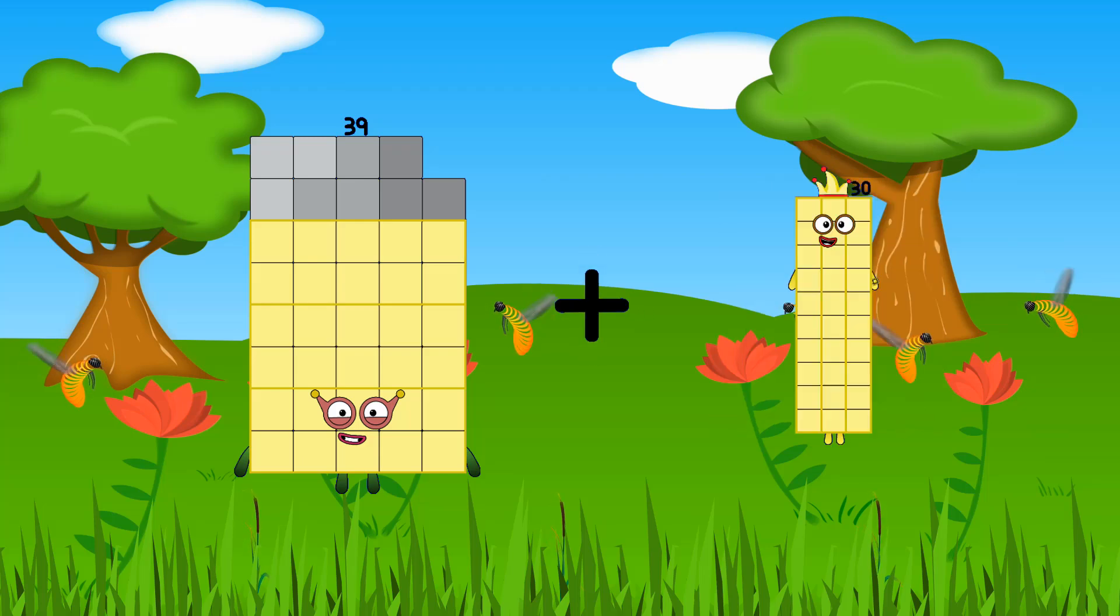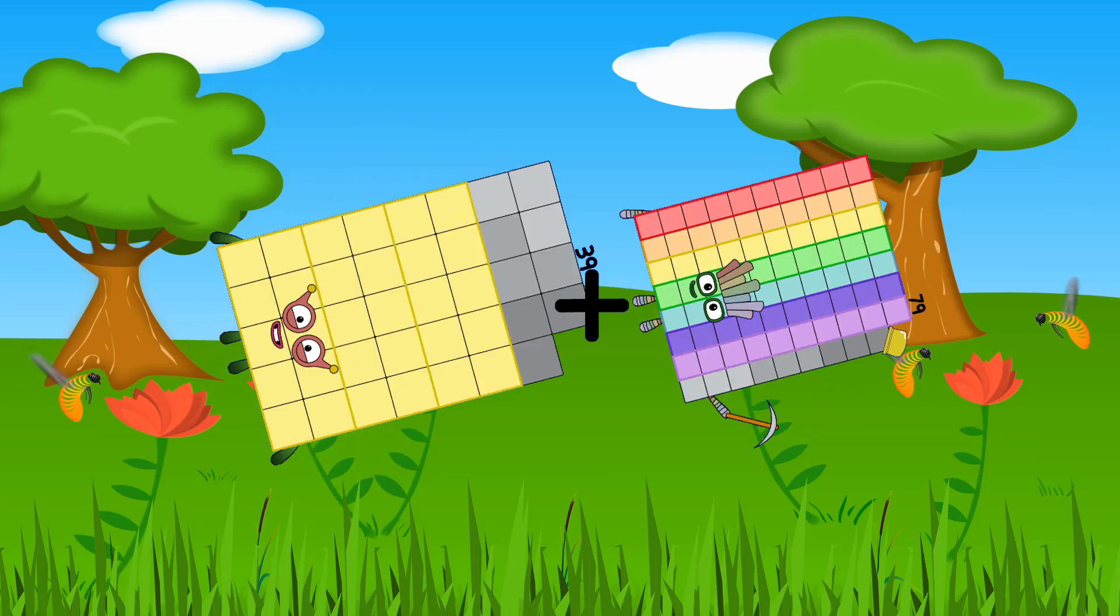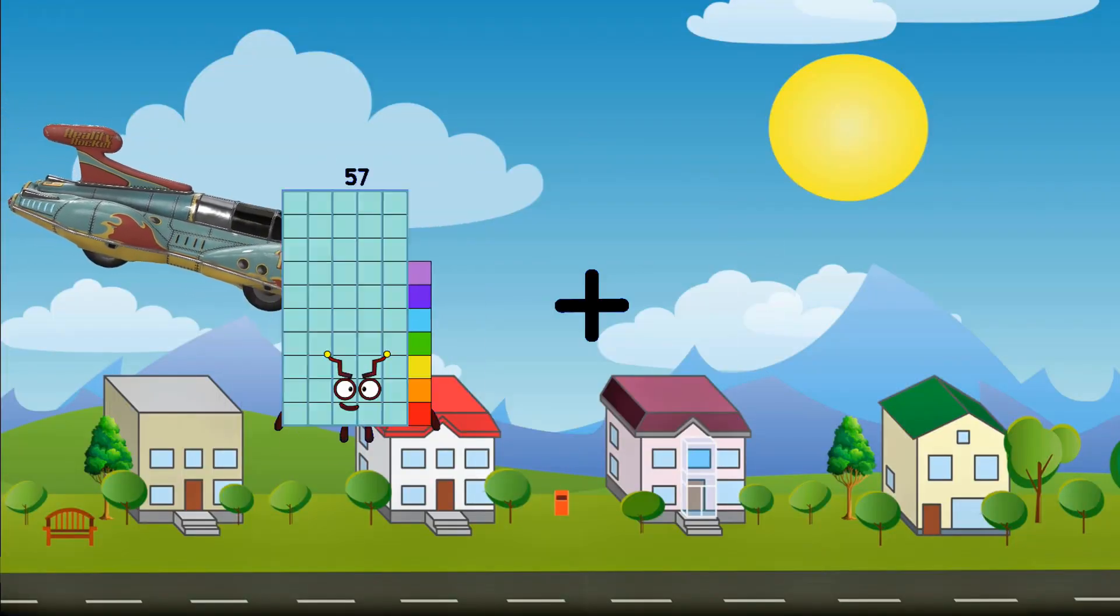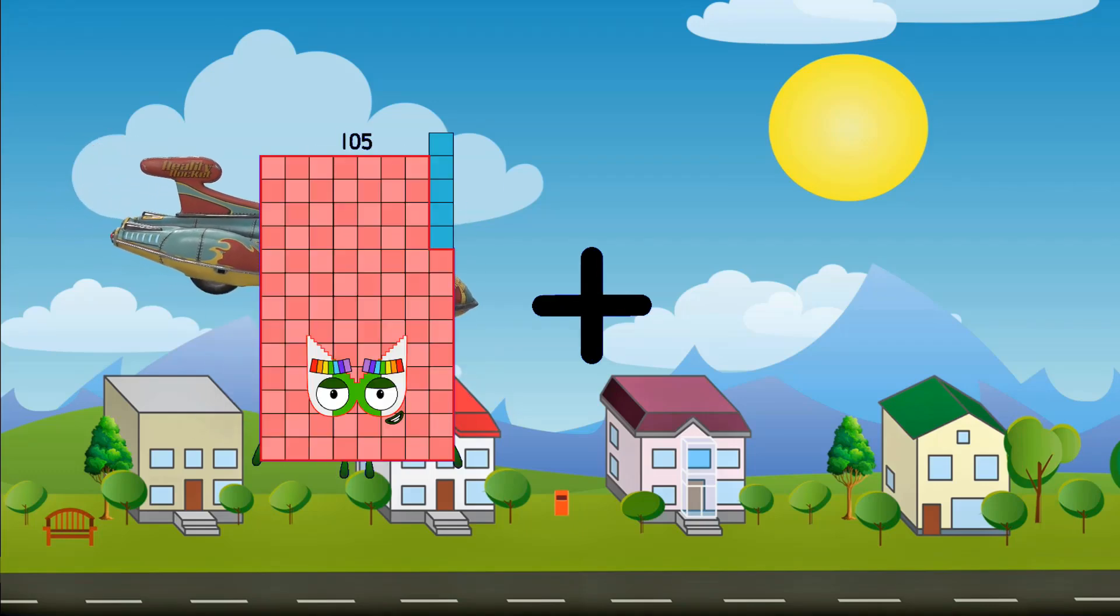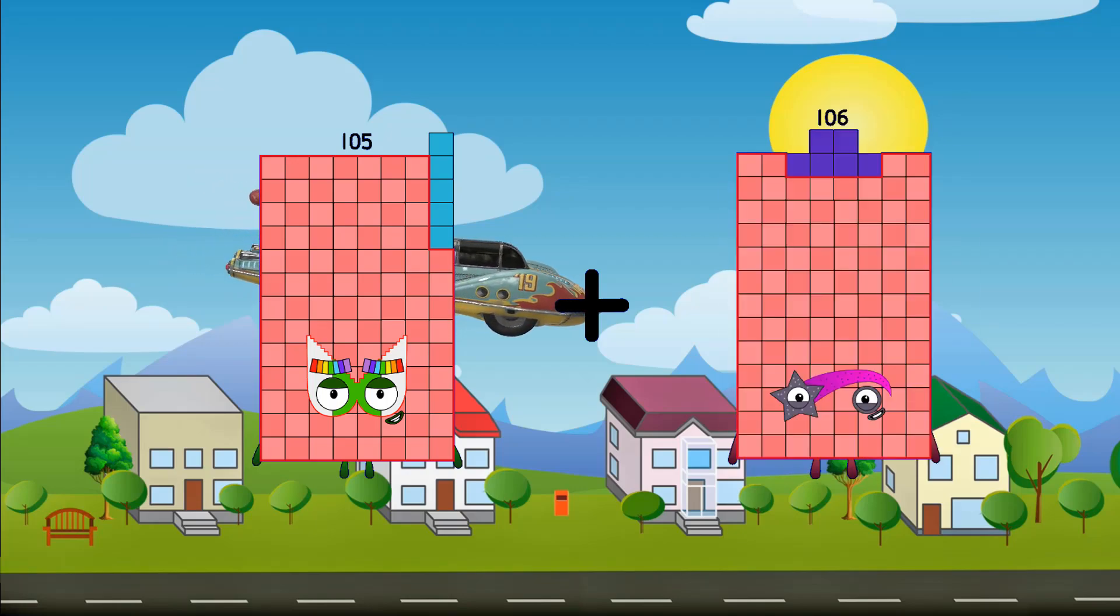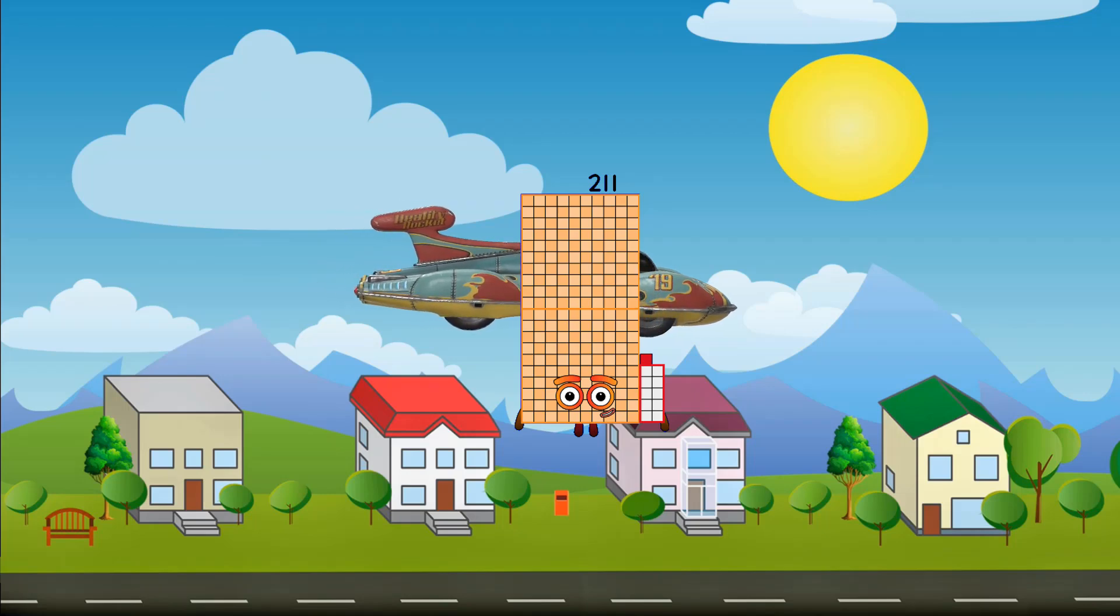39 plus 79 equals 118. 105 plus 106 equals 211.